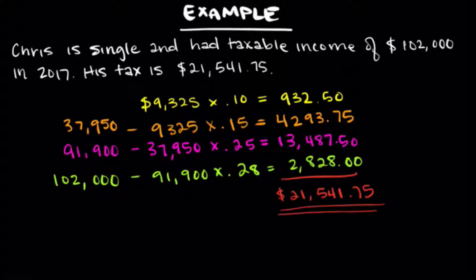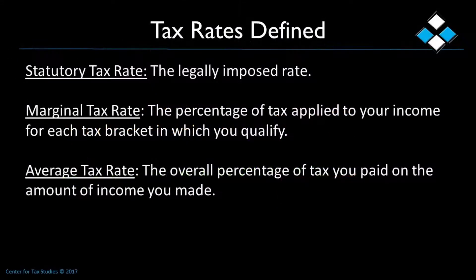You then add all of those amounts from each bracket to get $21,541.75 — that's the amount of tax Chris would owe for 2017. There are some terms thrown around when talking about tax: statutory tax rate, marginal tax rate, and average tax rate. The statutory tax rate is the legally imposed rate — income tax can have multiple statutory rates for different income levels, while a sales tax may have a flat statutory rate. The marginal rate is the percentage of tax applied to your next dollar of taxable income above a predefined threshold. For Chris with $102,000, his marginal rate is 28%.